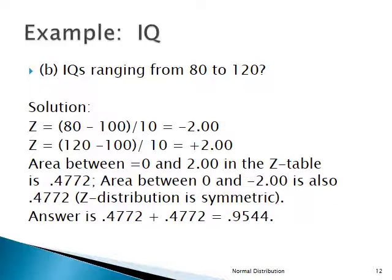For Part B, we look at IQs from 80 to 120 with the same distribution. Z for 80: (80 − 100)/10 = −2. Z for 120: (120 − 100)/10 = +2. From the table, the area between 0 and 2 is 0.4772, and the area between 0 and −2 is also 0.4772 by symmetry. Adding them: 0.9544, so 95.44% of the population has IQs between 80 and 120.